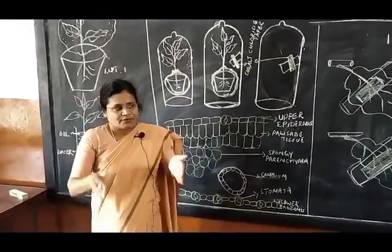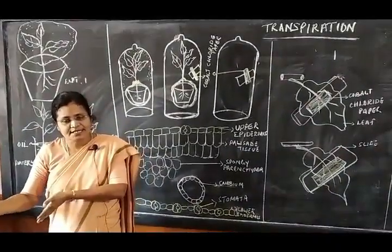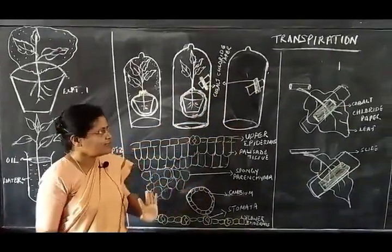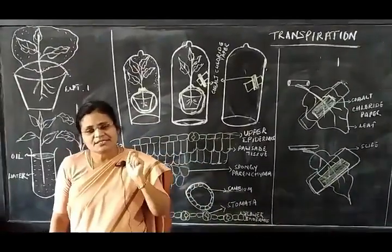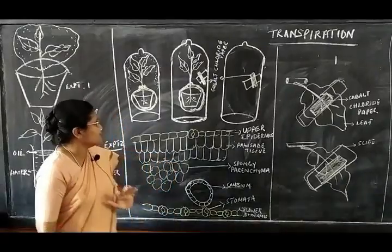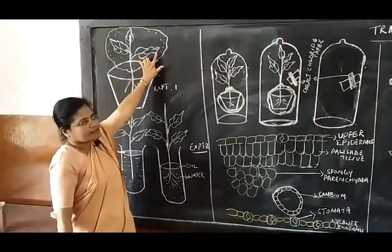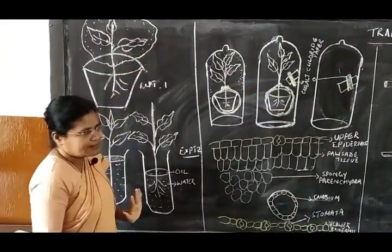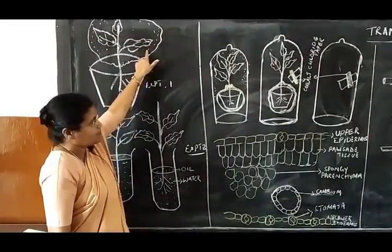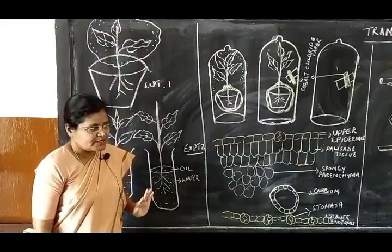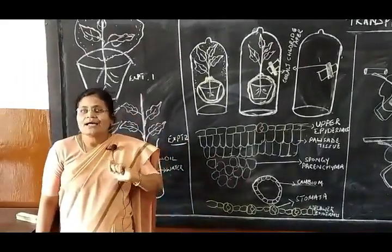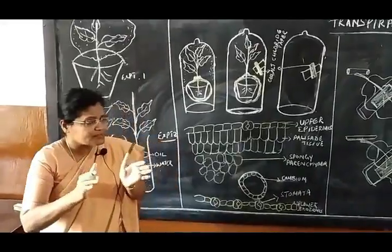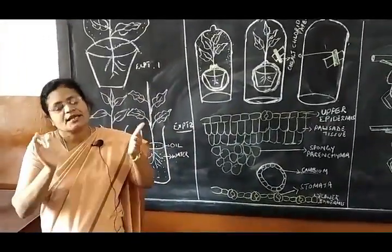Now we come to the next chapter: transpiration — the last chapter of plant physiology. Transpiration is the loss of water in the form of water vapor from the aerial part of the plant. Compare this to gutation, which is the loss of water in the form of water droplets due to root pressure through hydathodes. Differentiating transpiration and gutation is a common exam question.